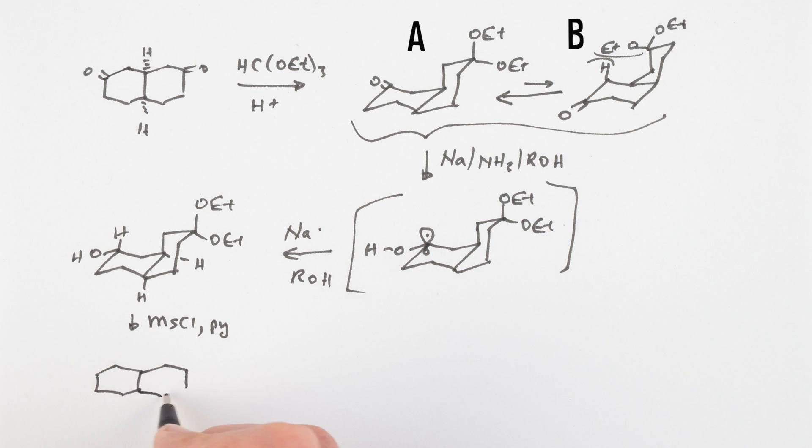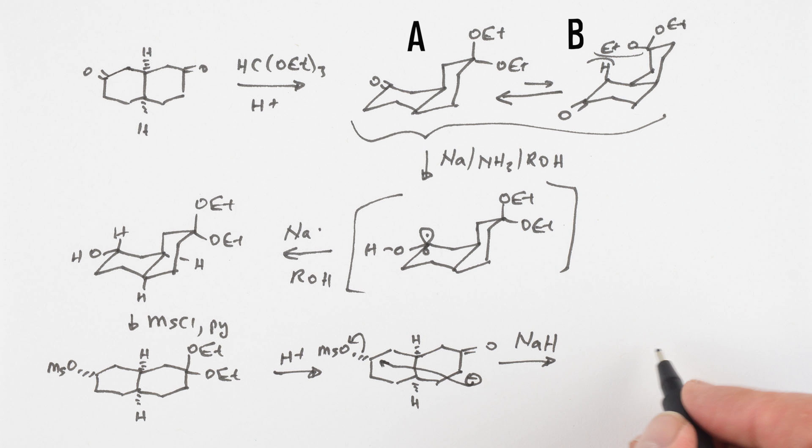The alcohol was mesolated, and the ketel was hydrolyzed. The ketone mesolate was treated with sodium hydride to give the enolate, which displaced the mesolate in an intramolecular fashion to give the same ketone as Whitlock.